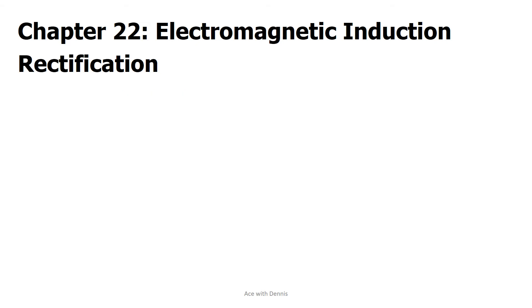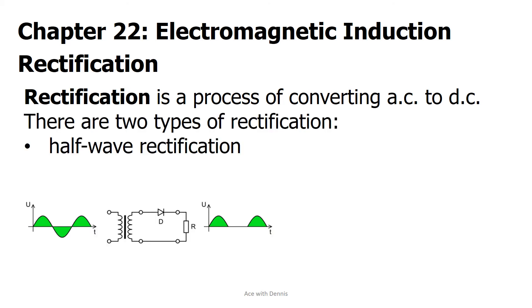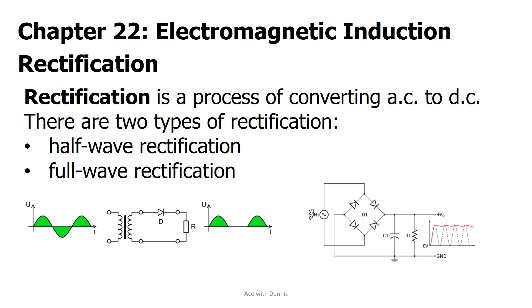Rectification. Rectification is a process of converting AC to DC. There are two types of rectification: half-wave rectification and full-wave rectification.